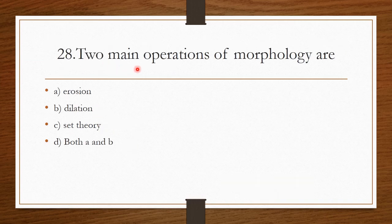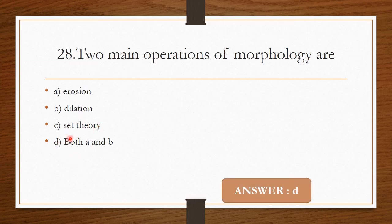Question 27: The two main operations of morphology are — Option A: Erosion. Option B: Dilation. Option C: Set theory. Option D: Both A and B. The correct answer is Option D — Both A and B, that is erosion and dilation.